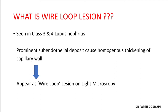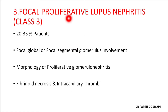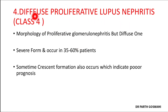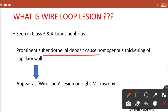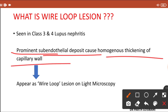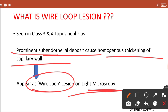Wire loop lesion can be seen in proliferative lupus nephritis — both Class 3 and Class 4. It occurs due to prominent sub-endothelial deposits of immune complexes, which lead to homogeneous thickening of the glomerular capillary wall, giving the appearance of a wire loop on light microscopy.